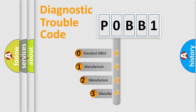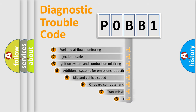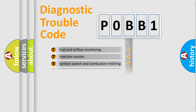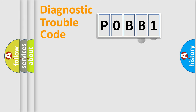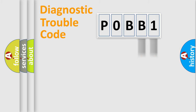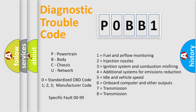If the second character is expressed as zero, it is a standardized error. In the case of numbers 1, 2, or 3, it is a more specific expression of a car-specific error. The third character specifies a subset of errors. This division is valid only for the standardized DTC code, and only the last two characters define the specific fault of the group.